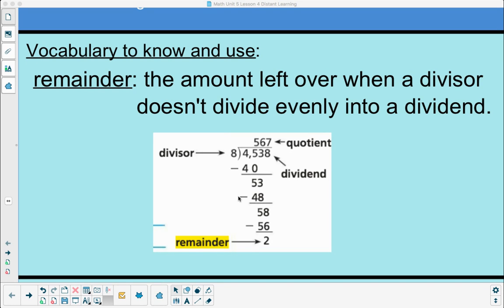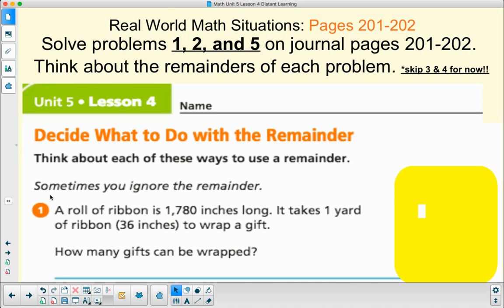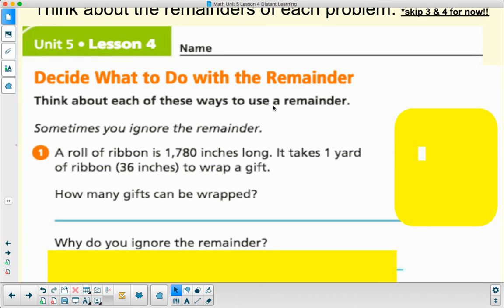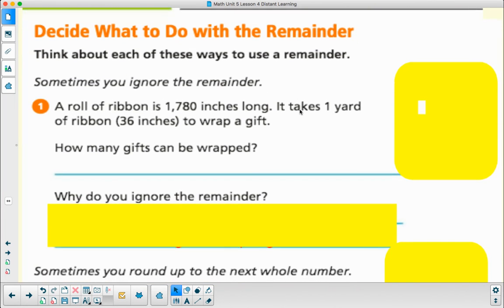In real-world situations when we're dividing, we have to decide what to do with that remainder. This is a super long lesson and it could take several days for you, so don't worry if it's taking you many days. First thing I'm going to have you do is go to page 201 and 202 and do numbers 1, 2, and 5. You get to skip 3 and 4 for now. As you're doing them, you need to think about what you should do with the remainder.